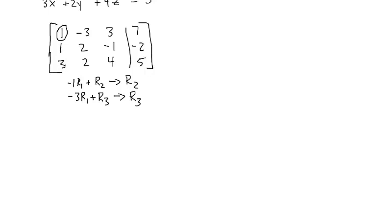Remember, in order to create a 0, we need to multiply the pivot row by a number such that when we add it to the other rows, we get zeros where we want them. The first row doesn't change. In the second row, we're doing row 2 minus row 1: 1 minus 1 is 0, 2 minus negative 3 is 5, negative 1 minus 3 is negative 4, and negative 2 minus 7 gives us negative 9.